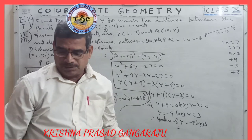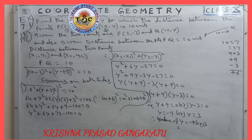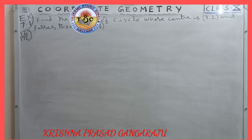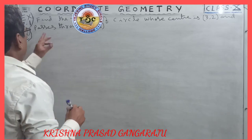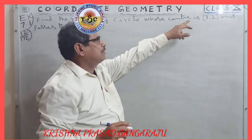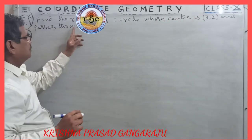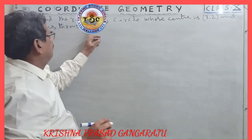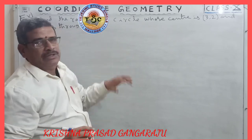Now the 12th question: find the radius of the circle whose center is (3, 2) and which passes through the point (−5, 6). We have to find the radius.